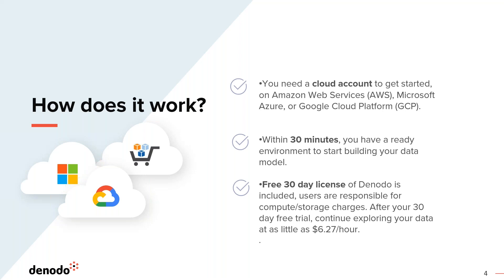The free trial is valid for 30 days, and during that period, users are only responsible for the compute and storage charges. The Donado license cost is completely free during that timeframe. After the 30 days, you can continue at a low hourly price of $6.27 per hour.